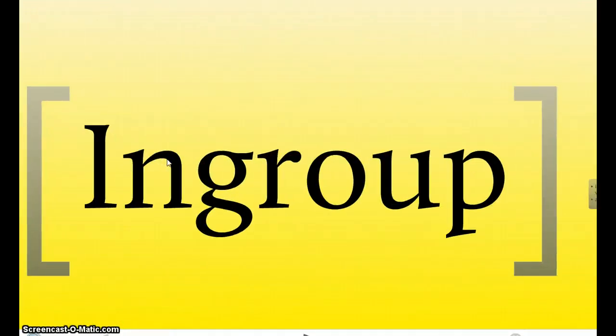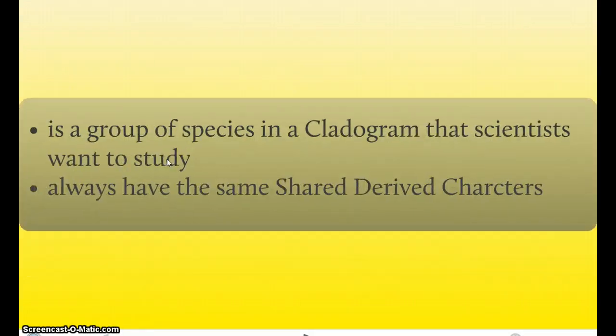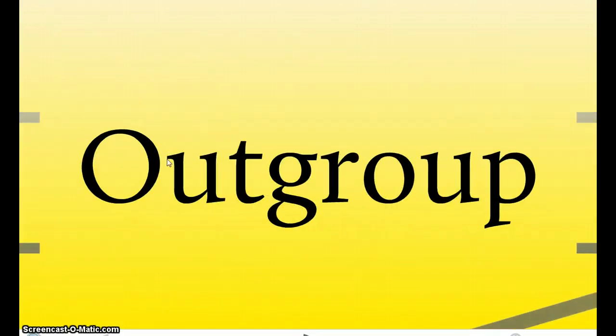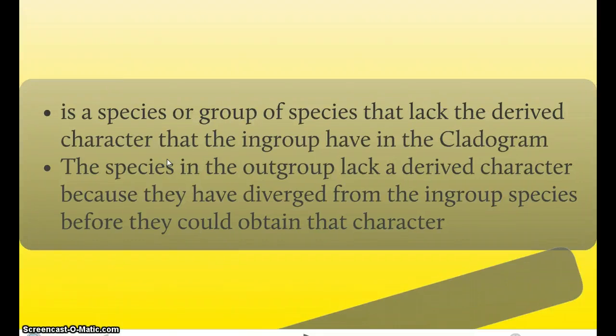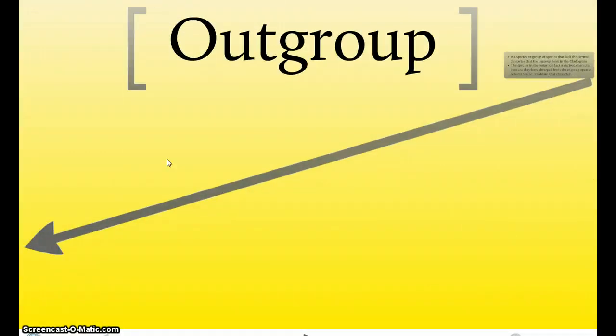Next, we have something called an ingroup. An ingroup is a group of species in a cladogram that scientists want to study. And these ingroup species, they always have the same shared derived characters. The outgroup is a species, or group of species, that lack the derived character that the ingroup have in the cladogram. The species in the outgroup lack the derived character, because they diverged from the ingroup species before they could obtain that character. So, let's clear these two new terms up, with a nice diagram.